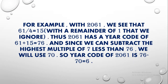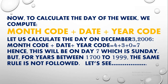For example, with the year 2061, we see that 61 divided by 4 equals 15 with a remainder of 1 that we ignore. Thus 2061 has a year code of 61 plus 15 equals 76. Since the highest multiple of 7 less than 76 is 70, the year code of 2061 is 76 minus 70, which equals 6.